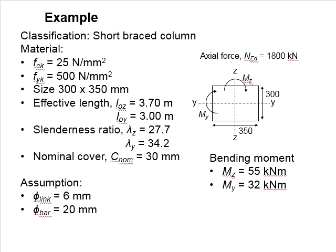You are asked to assume the bar size equals 20 mm while the link is 6 mm. The column is subjected to an axial load of 1,800 kilonewtons and biaxial bending of Mz in the z-axis is 55 kilonewton-meters while My in the y-axis is 32 kilonewton-meters. The axes of the column are indicated here. You may pause the video for a while for you to work out the solution.